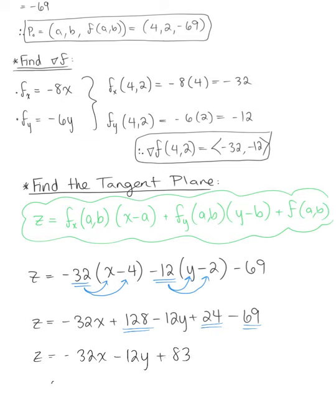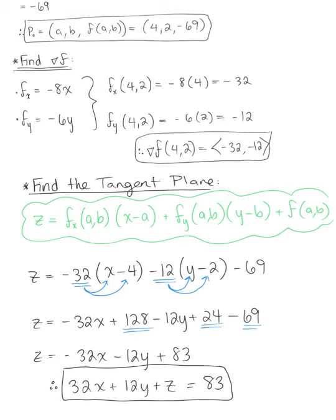Bringing all our variables to the left-hand side, we are left with a final answer of 32x plus 12y plus z equals 83. This is our final answer for the equation of the tangent plane.